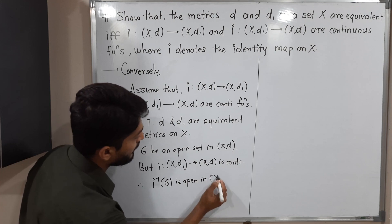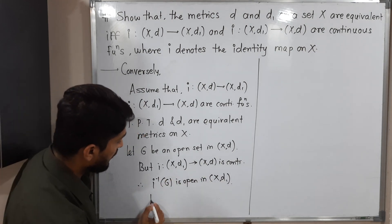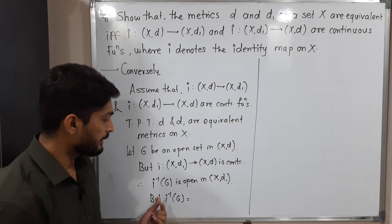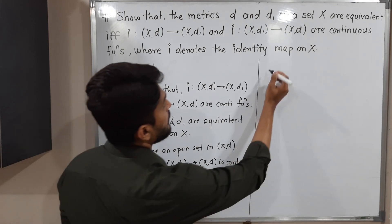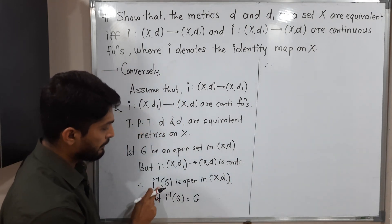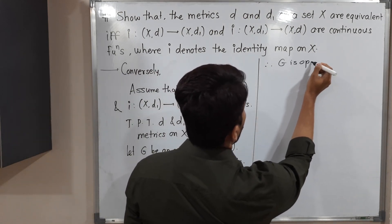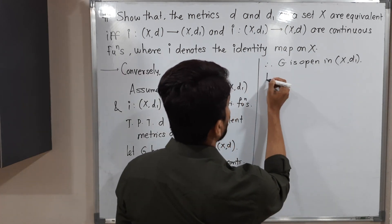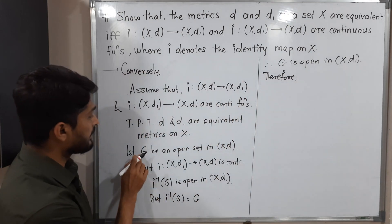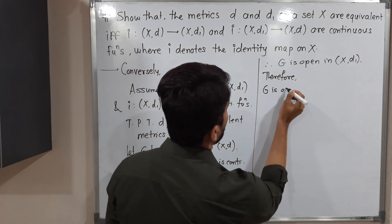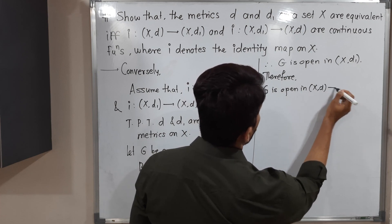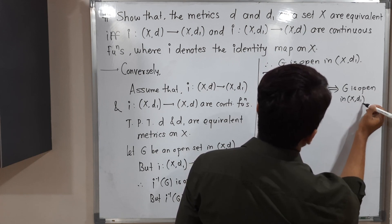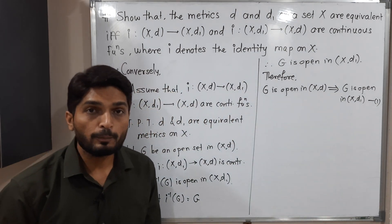Since i is the identity function, i⁻¹(G) = G. Therefore G is open in (X,d1). So we started with G open in (X,d) and proved G is open in (X,d1). Call this Statement 1. Now we need to prove the second half — take any open set in (X,d1) and prove it is open in (X,d).